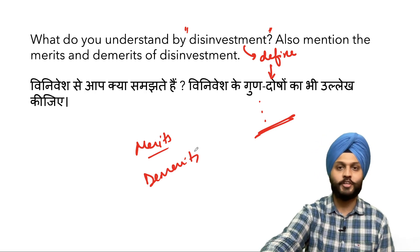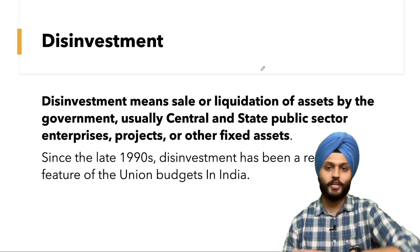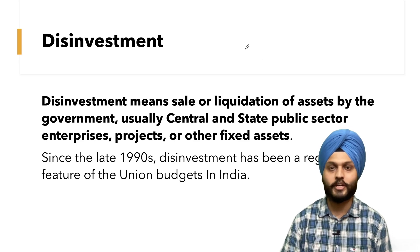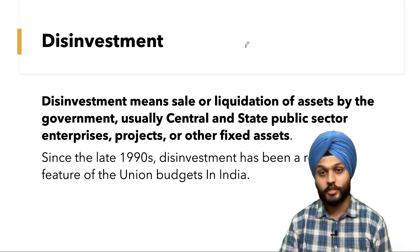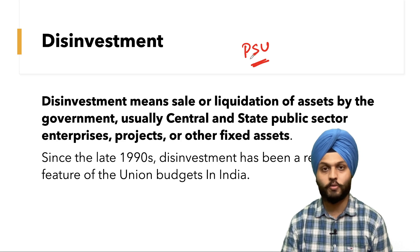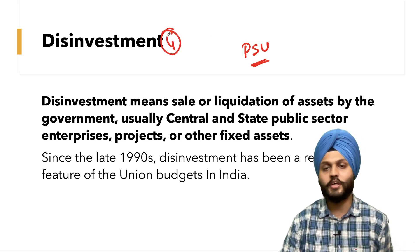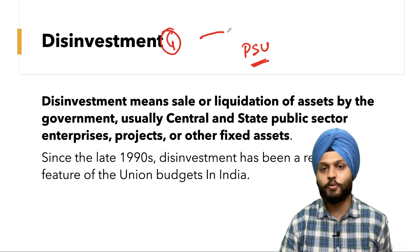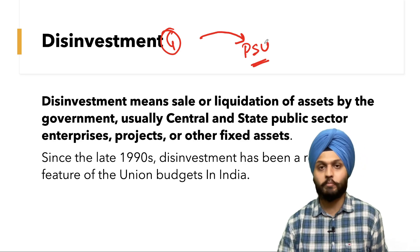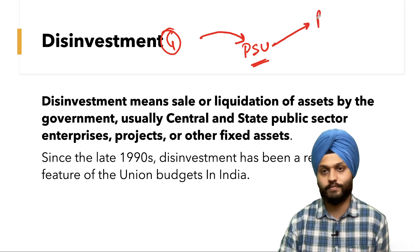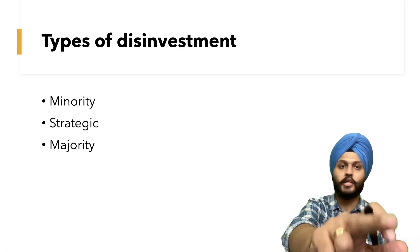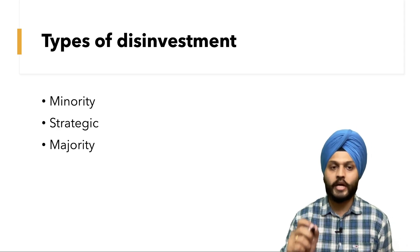Let's look at the disinvestment definition. Imagine the government owns a public sector company — a PSU. The government decides to sell part of the PSU or the complete PSU to the private sector. There are three types of disinvestment: minority, strategic, and majority.